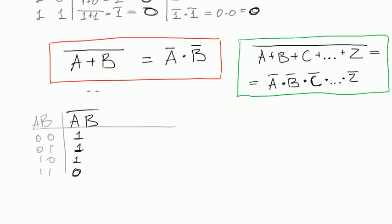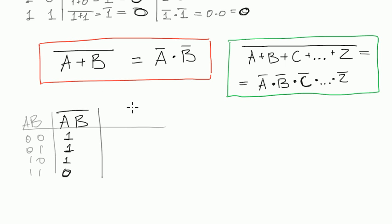And now consider this expression. A negated plus B negated. And let's calculate what's that. It would be 0 negated is obviously 1, plus 0 negated is 1. Then 0 negated is 1 plus something is also 1.